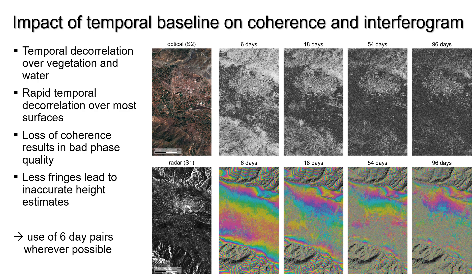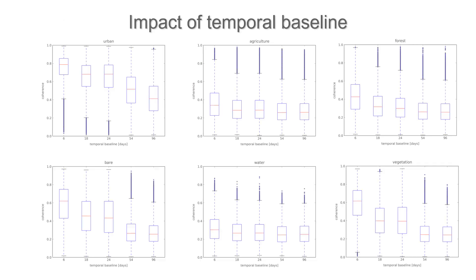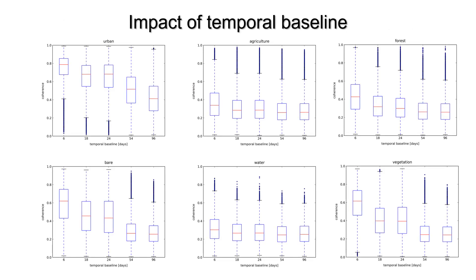Noisy interferograms produce inaccurate DEMs. These boxplots show the decrease of coherence for various surface types. While it remains comparably high over urban and bare areas, vegetated areas suffer from rapid loss of coherence within a short time.